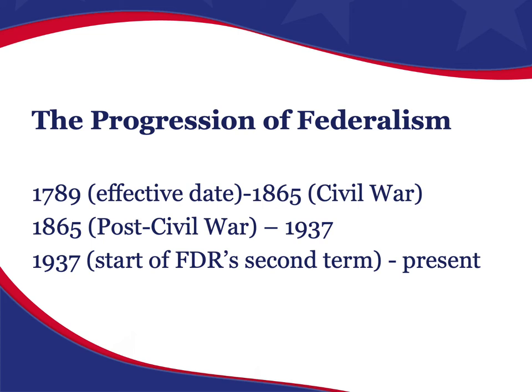Federalism has progressed through three different eras: from 1789 — the effective date of the Constitution — until the Civil War; from after the Civil War to 1937; and from 1937, the start of Franklin D. Roosevelt's second term, to the present. These three periods show how federalism has evolved over time.